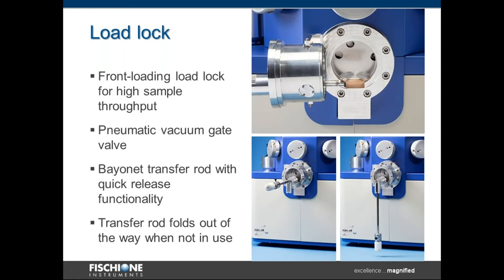The try-on mill features a front-loading load lock, and this is an ideal situation for high-throughput sample flow. A pneumatic gate valve separates the load lock from the instrument chamber, which is always under vacuum. With this system, we have a quick-release quarter-turn bayonet located on the end of the transfer rod, which allows for easy engagement and disengagement of the sample holder. On the left, you can see the transfer rod in the loading or unloading position. When it's not being utilized, it folds down out of the way.